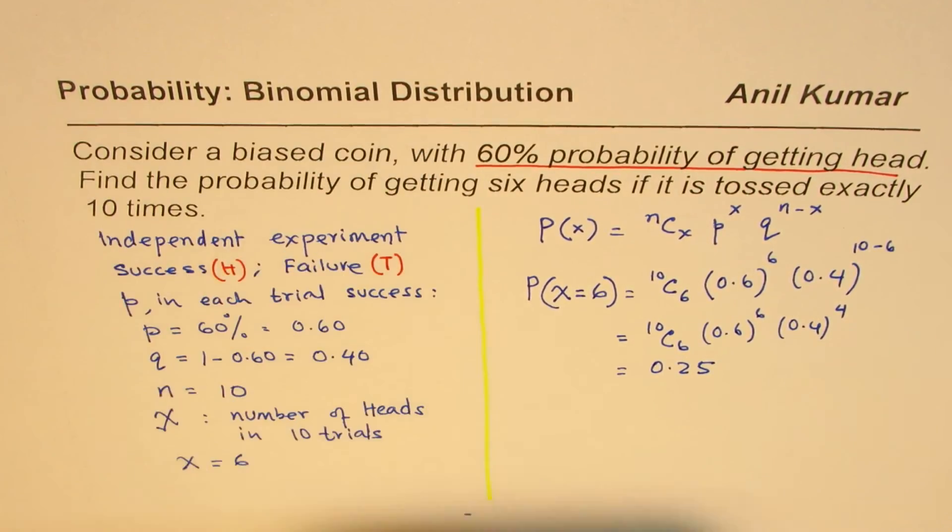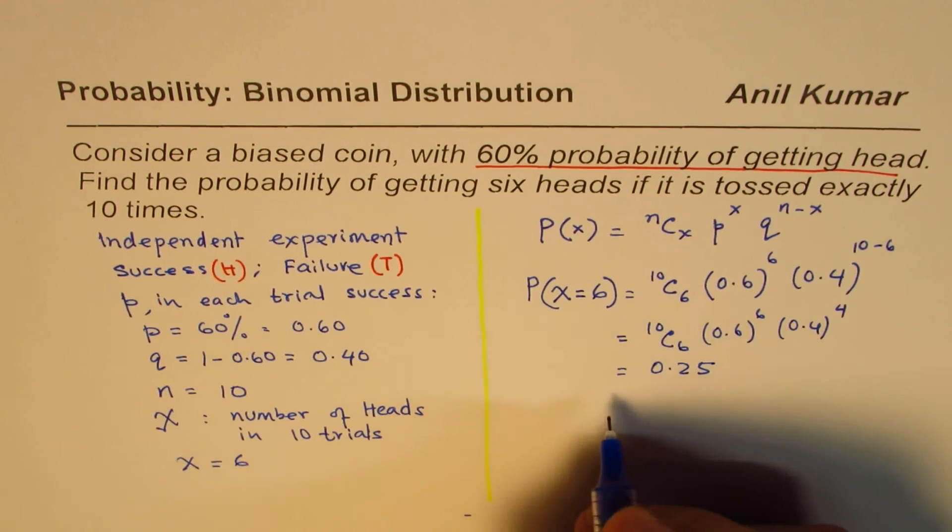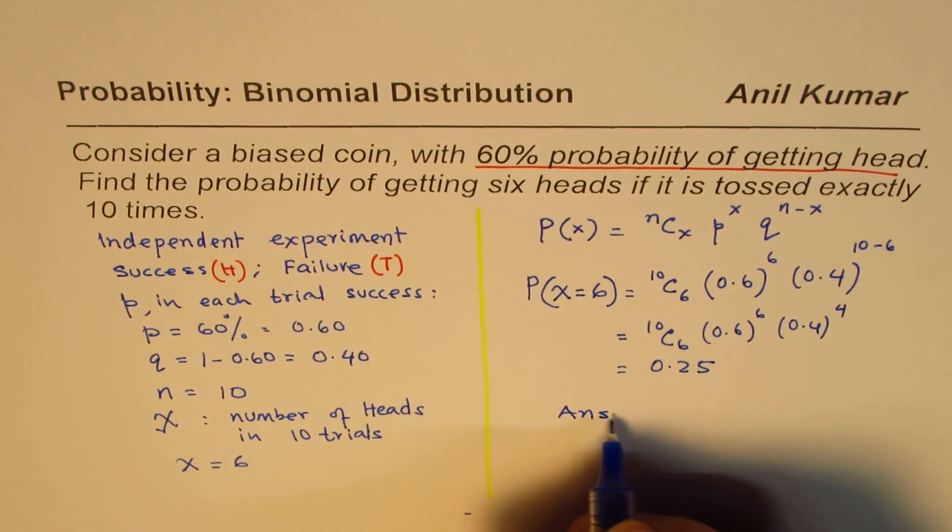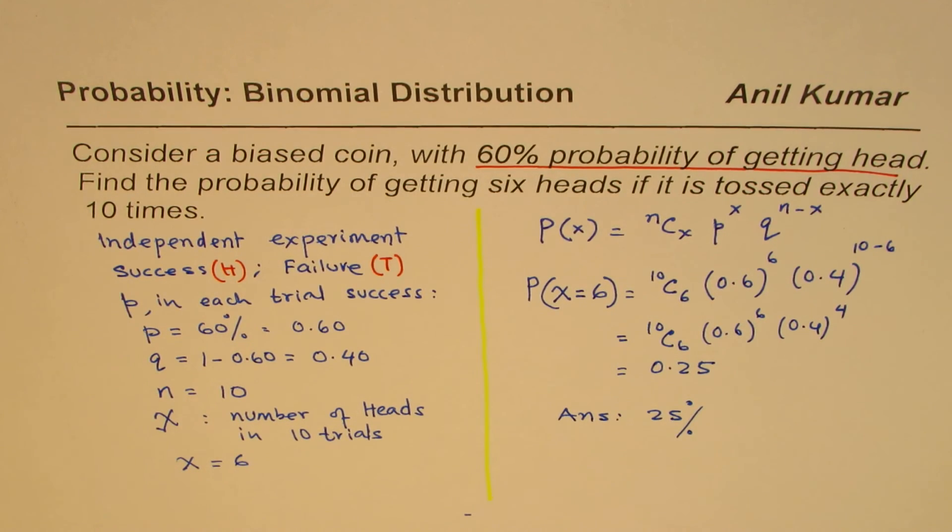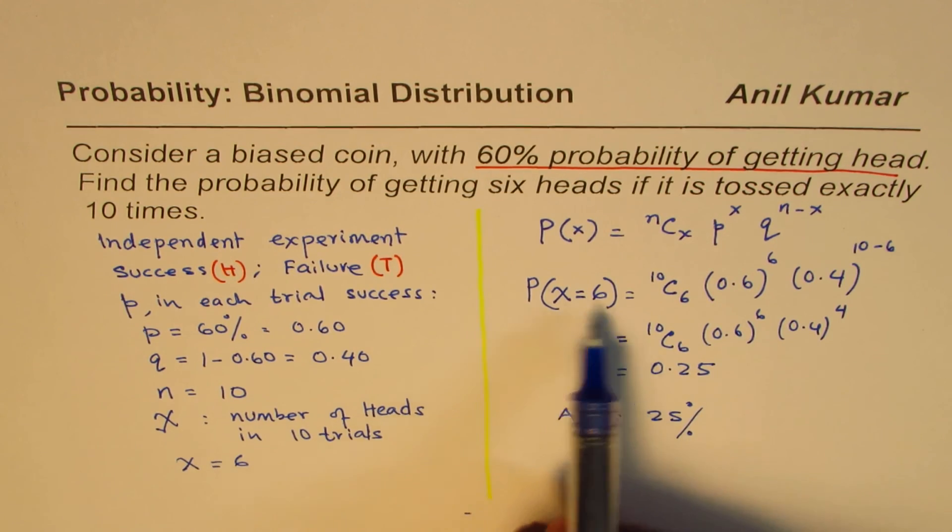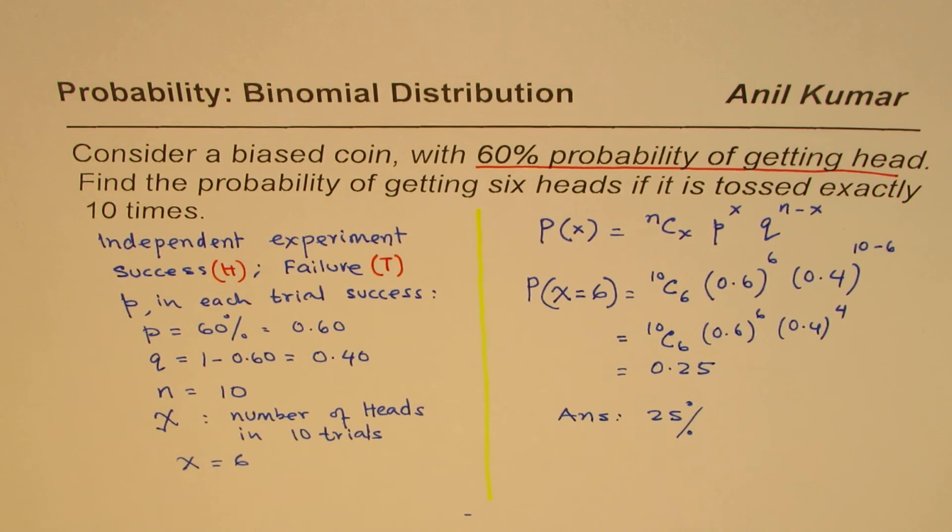We can round this to two decimal places. So we get the probability as 25%. There are 25% chances of getting 6 heads out of 10 for this biased coin. So that is how we can actually solve this question. I hope that helps.